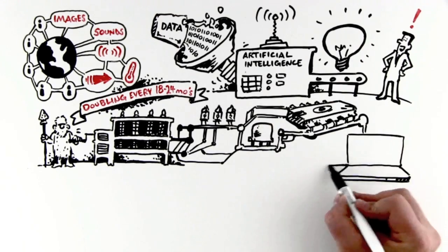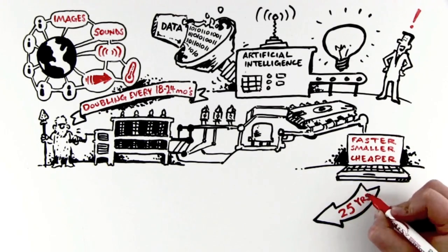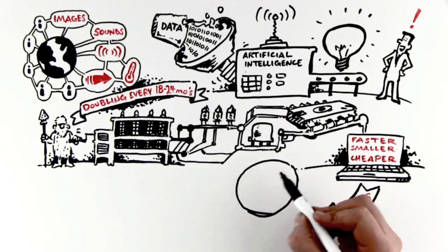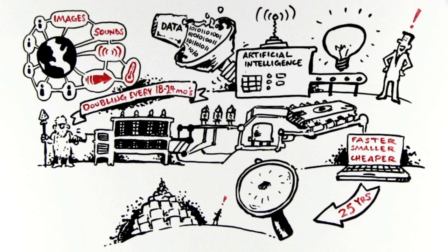Computers are now a million times faster, a million times smaller, and a thousand times cheaper than they were just 25 years ago. At this rate, over the next 25 years, computers will soon become microscopic in size, infinite in supply, and effectively free.